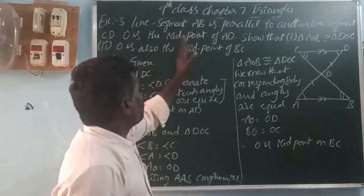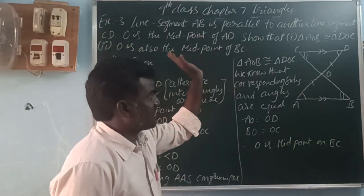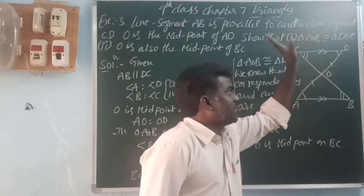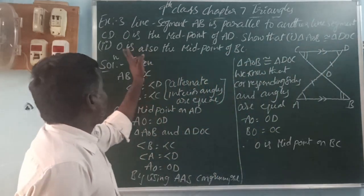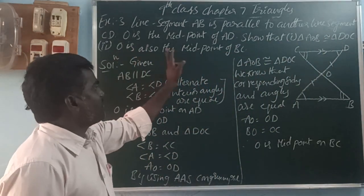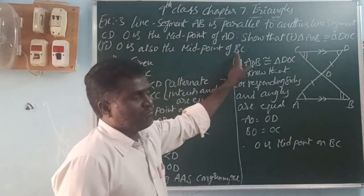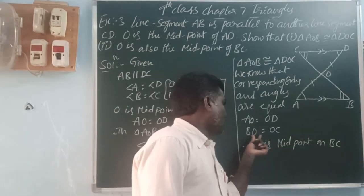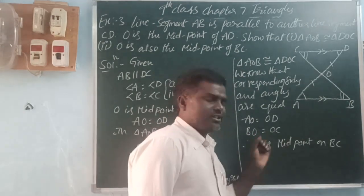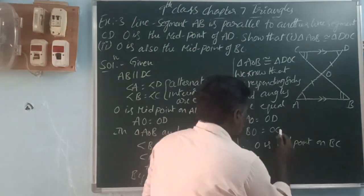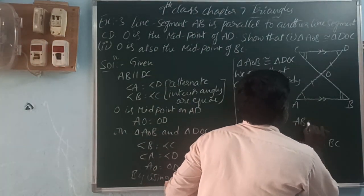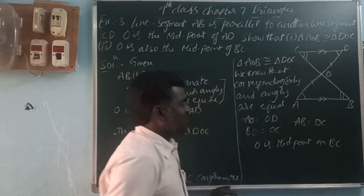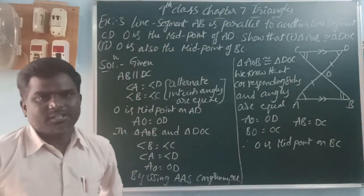So, what we have proven: first, triangle AOB is congruent with triangle DOC. Second, O is also the midpoint of BC — midpoint means dividing into two equal parts — that is, BO is equal to OC. And corresponding sides and corresponding angles are equal.